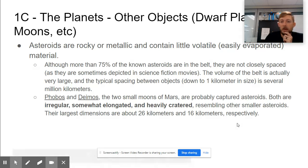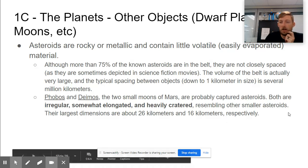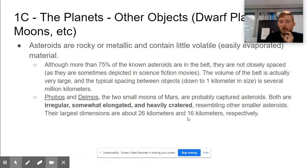They look a lot like other asteroids we've seen in the asteroid belt or that have come close to Earth. The largest one is about 26 kilometers and 16 kilometers—very small, especially compared to Ceres, which was over a thousand kilometers.